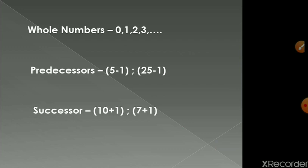First is whole number. Whole numbers are counting numbers and zero, so whole numbers start from zero, whereas natural numbers start from one.